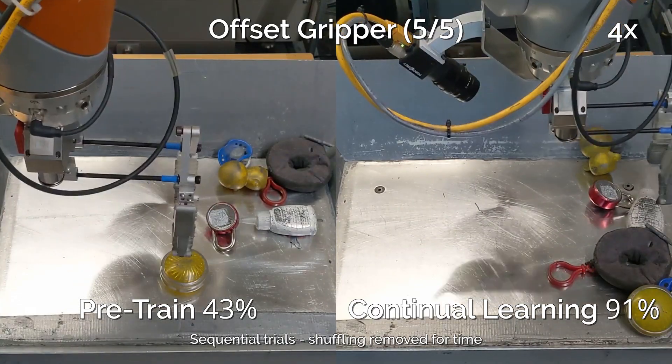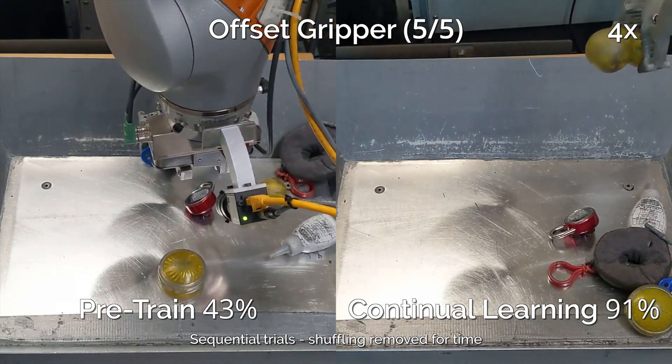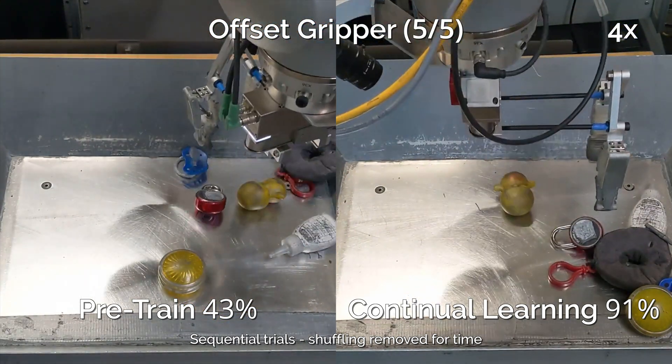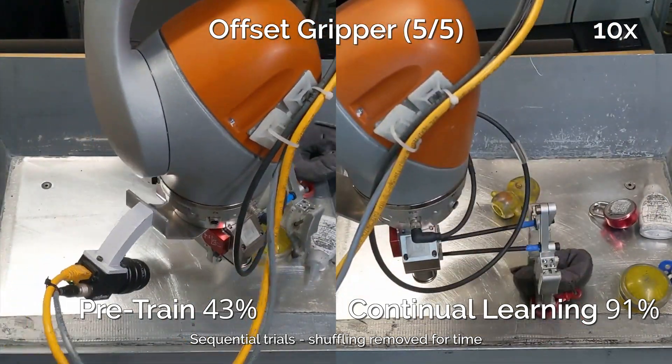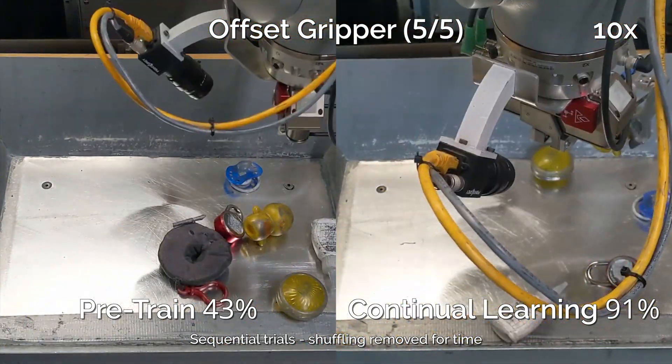And here's the performance of the fifth and final iteration, the offset gripper challenge. This policy's performance is only 7% lower than its single-step counterpart, despite the fact that this network received five times as many gradient updates, and only the last one-fifth of those steps contained offset gripper data.